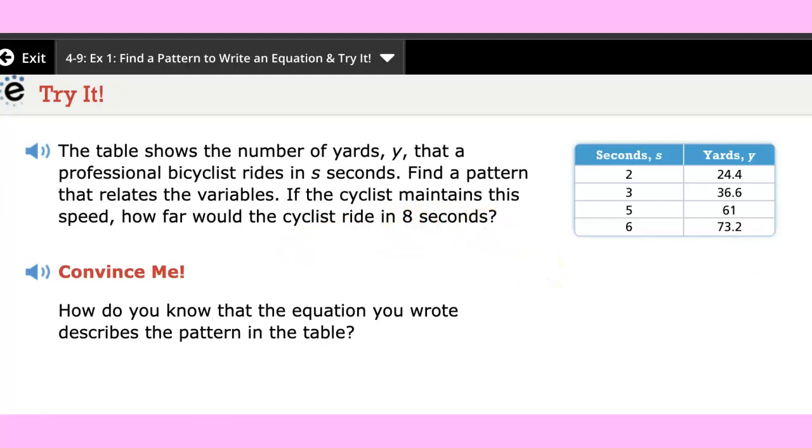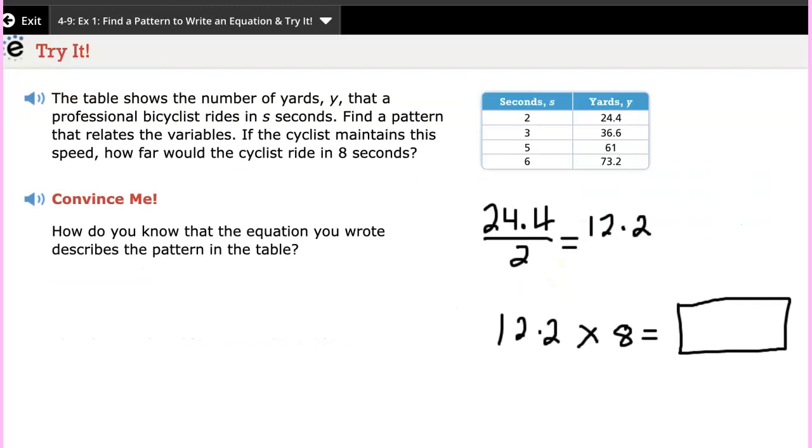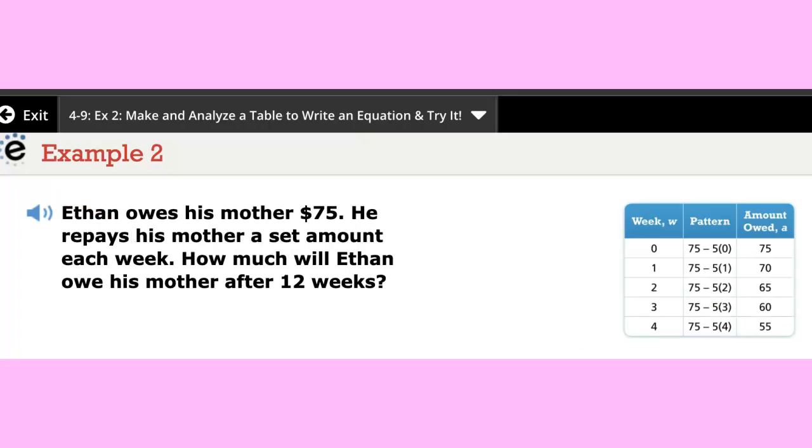You guys are right when you said you find how much is in one second, how many yards will that be. So we're going to divide twenty four point four divided by two, that gives you twelve point two. And then since we know how much is one second, now you could multiply it to eight to get your answer. Work on it.